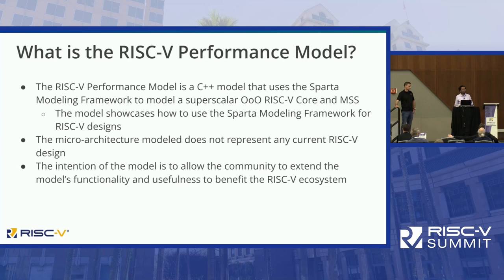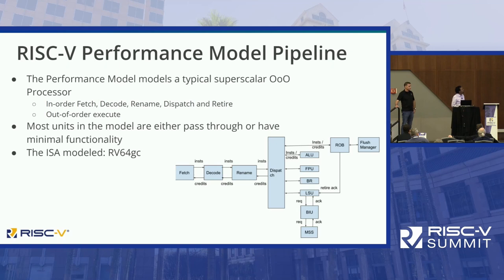The intention of this project is to create this model so that the community can use it, play with it, do some basic performance analysis, contribute to the model, and even extend it for their proprietary needs. It's a typical superscalar processor with in-order fetch, in-order decode, rename, dispatch, out-of-order execute, and in-order retire. The instructions flow through the pipeline, and flow control is already there — if a queue fills up, such as the rename queue, it will back-pressure to the decode stage.